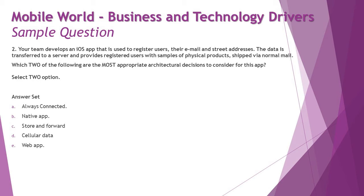Moving to question number two: your team develops an iOS app used to register users' email addresses and street addresses. The data is transferred to a server and provides registered users with samples of physical products shipped via postal mail or courier services. Which two of the following are the most appropriate architectural decisions to consider for this app? First, note that you need to select two options — be careful whenever you see more than four options requiring multiple selections.